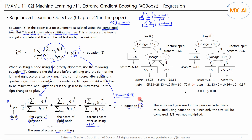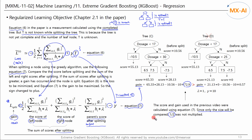In the previous video, we used Equation 7 to calculate the gain and chose the split with the largest gain as the optimal split point. Equation 6 is a concept of loss and is therefore minimized, while Equation 7 is a concept of gain and is therefore maximized — so their signs are opposite. Also in the previous video, only the size of the scores was compared, so the one-half factor was not applied.